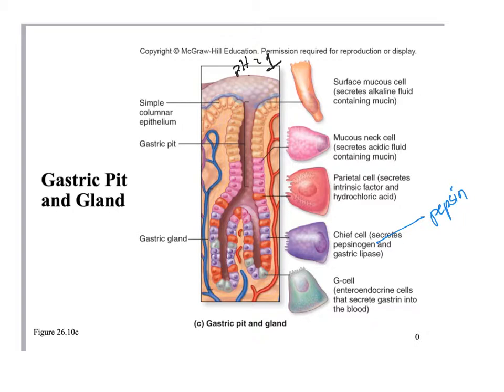The enteroendocrine cells secrete gastrin into the blood. Gastrin is a hormone — it goes to the blood and then acts back on the stomach. Gastrin helps increase motility of the stomach and increase secretions from these cells, acting somewhat like a positive feedback mechanism.